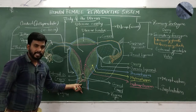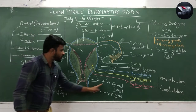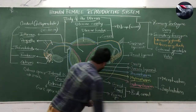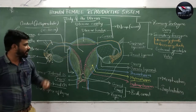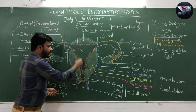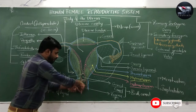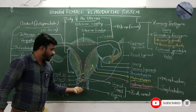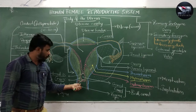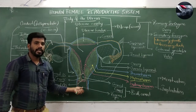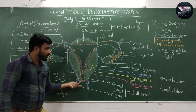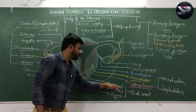The cervix is followed by the vagina, which is approximately 10 centimeters in length. The cervical canal and vagina together are called the birth canal, because after complete development, baby delivery occurs through this canal. The vagina has three functions: it receives the penis during sexual intercourse, it allows menstrual flow to pass through, and it acts as the birth canal for delivery of the baby.